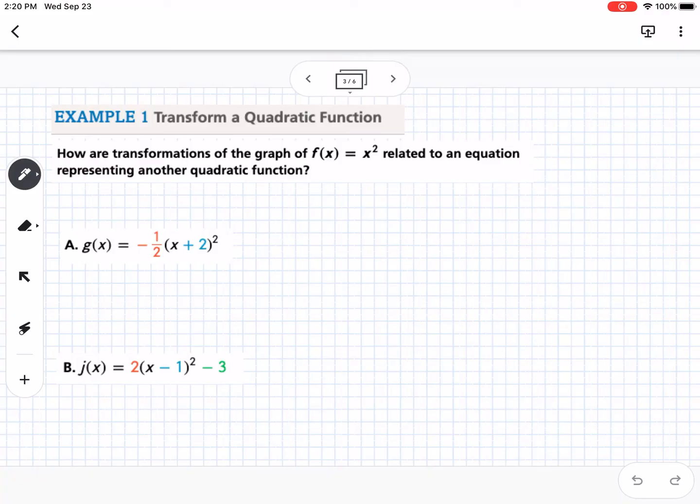The first one is how are transformations of the graph of f(x) = x² related to an equation representing another quadratic function? We're identifying what these things are doing to our graph. The negative out front means it's going to be a reflection over the x-axis. The one half we know from transformations is going to make it wider. We could also use the correct terminology and say it is a vertical shrink or vertical compression.